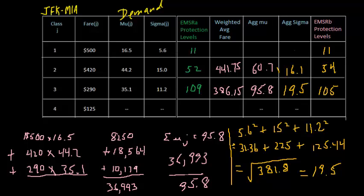Now that we know how to calculate protection levels using both versions of EMSR, which one is better? That is a difficult question to answer. Airlines use both EMSR-A and EMSR-B. EMSR-B is probably more widely used, but EMSR-A is still preferred by some airlines. The decision comes either from experience — having one algorithm implemented and then choosing to switch — or from performing simulations on both algorithms to see which results in the greatest revenue. In experiments, both EMSR-A and EMSR-B result in very close to optimal revenue. Both models are extremely effective, easy to understand, easy to implement, and they both perform very well in practice.